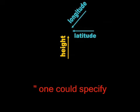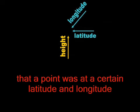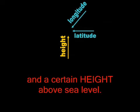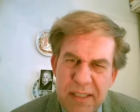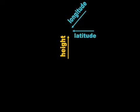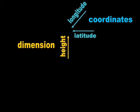One could specify that a point was at a certain latitude and longitude and a certain height above sea level. Height is a coordinate? In science, we know better. The coordinate which runs up and down is called altitude. This is subject matter that we typically cover in high school.